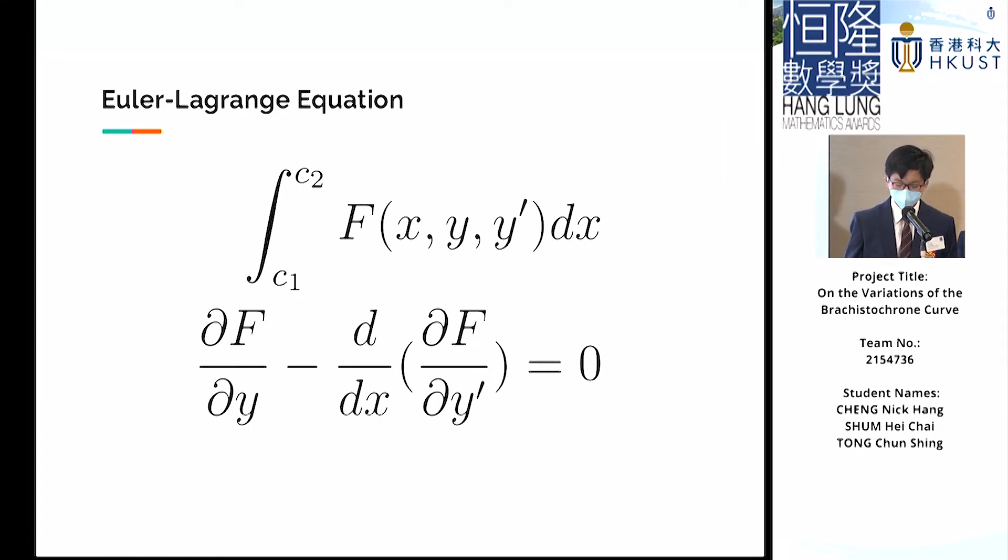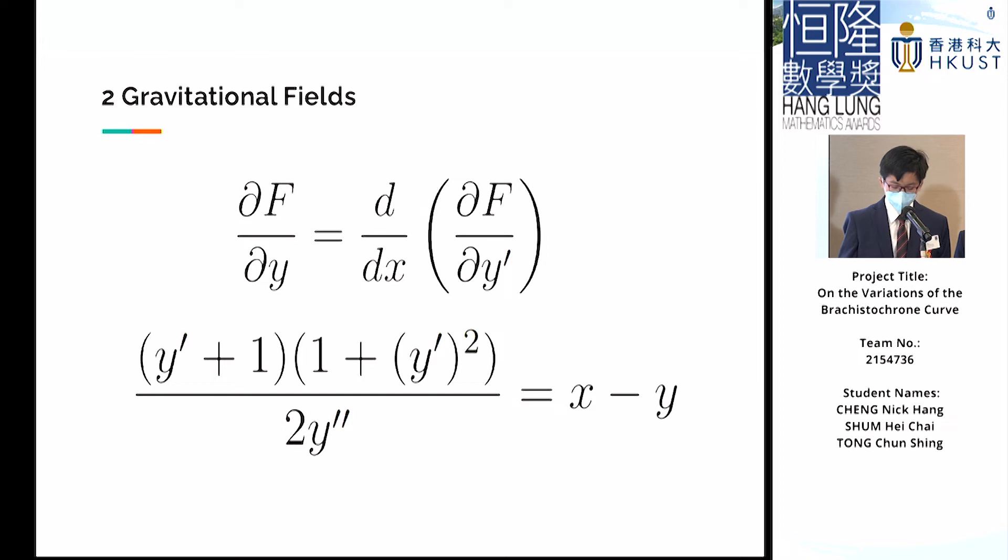From here, we apply the Euler-Lagrange equation, which states that if f, a function of x, y, and the derivative of y with respect to x is moved, then the definite integral of f attains its extreme values if the equation at the bottom is true. Applying the Euler-Lagrange equation and simplifying, we have x - y on the right-hand side, and the first and second derivatives of y on the left.